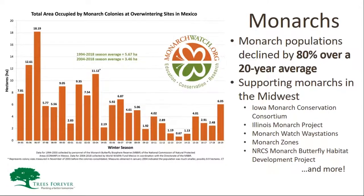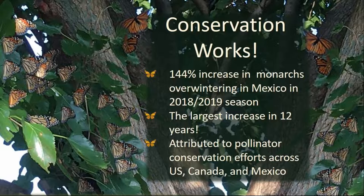This is a nice graph showing the total area in hectares occupied by colonies of monarch butterflies overwintering in Mexico. We use this as a surrogate to gauge the overall health of the monarch population. You can see this overall decline of over 80% on this 20-year average. However, a wide range of groups are really working hard throughout the Midwest to support monarch butterfly populations. Back in the winter of 2018-19, we saw a 144% increase in that overwintering area — the largest increase in 12 years — largely attributed to great work being done in the Midwest.